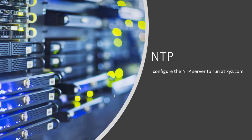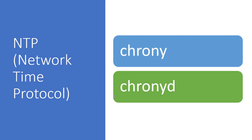The second topic is NTP, which stands for Network Time Protocol. NTP helps you synchronize your system with any time server. They can give you an address of a time server and ask you to synchronize your system with it — for example: 'configure the NTP server to run at' and they will give you some address. NTP uses the chrony service and the chronyd daemon to synchronize the system with the required server.